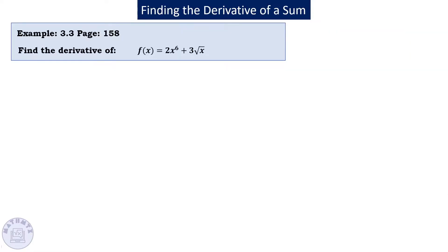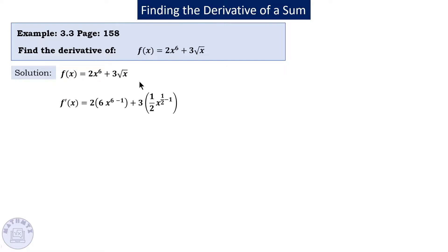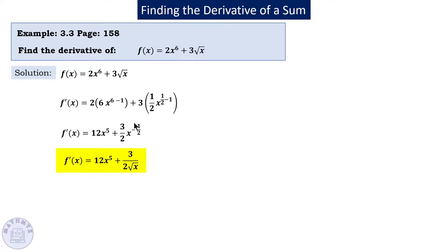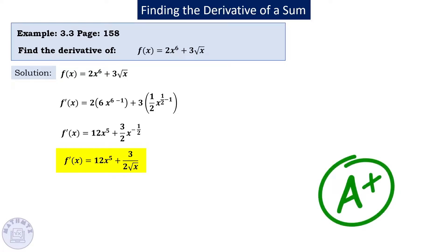Let's practice. Distribute the derivative over each term. Using the power rule: bring down the power 2, then subtract 1. For the square root term, rewrite as x to the 1/2, so the derivative gives 3 times 1/2 = 3/2 · x to the power −1/2. The simplest form uses positive powers, so x to the −1/2 becomes 1 over the square root of x.